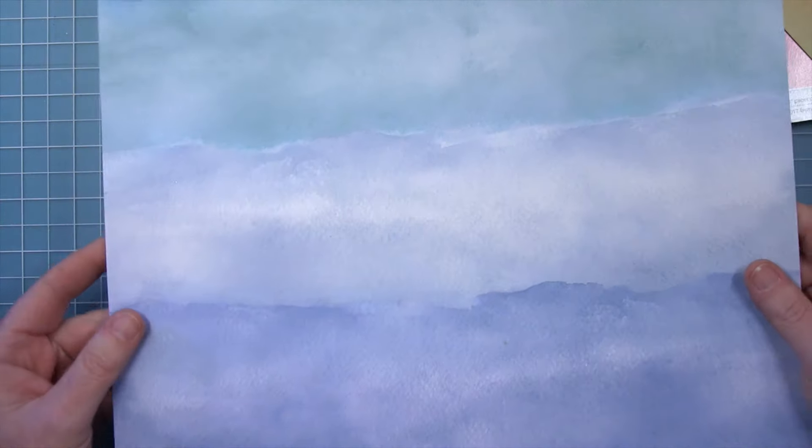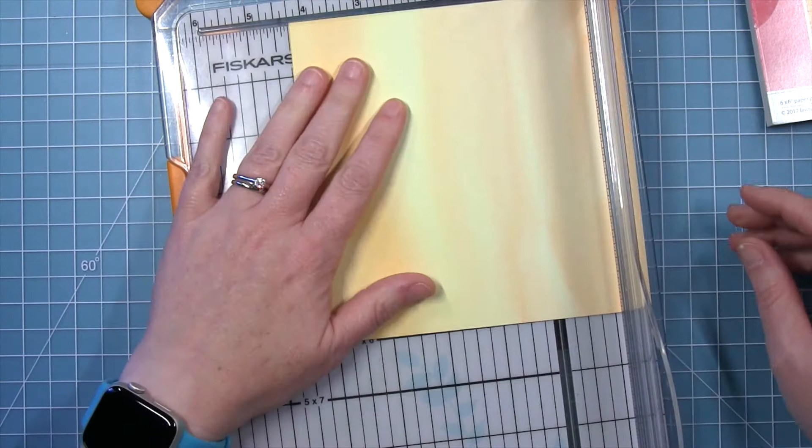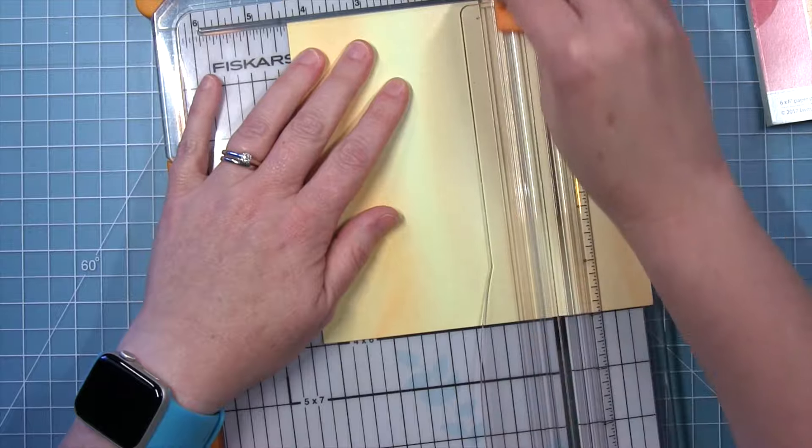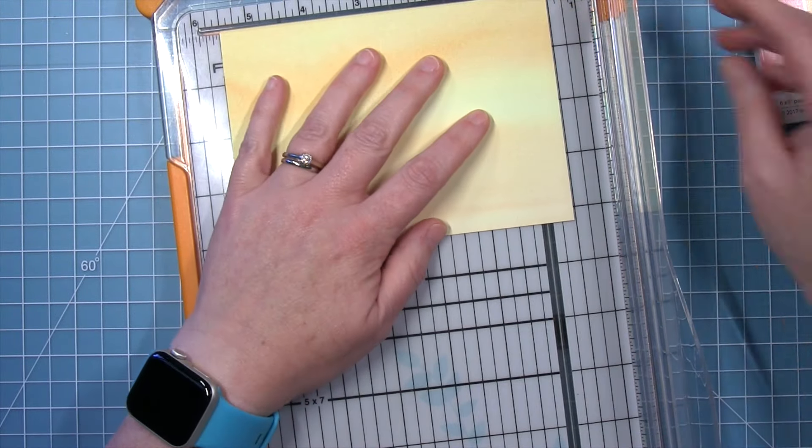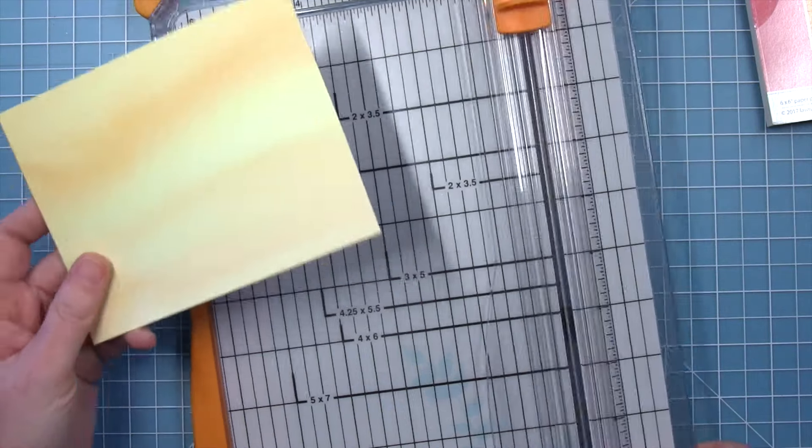And of course, these are the Blue Ridge mountains, so I'm going to use some blue watercolor wishes rainbow paper for my mountains. I use the 12 by 12 because I get those big blue stripes and you're going to see why that works out so well here in just a little bit.